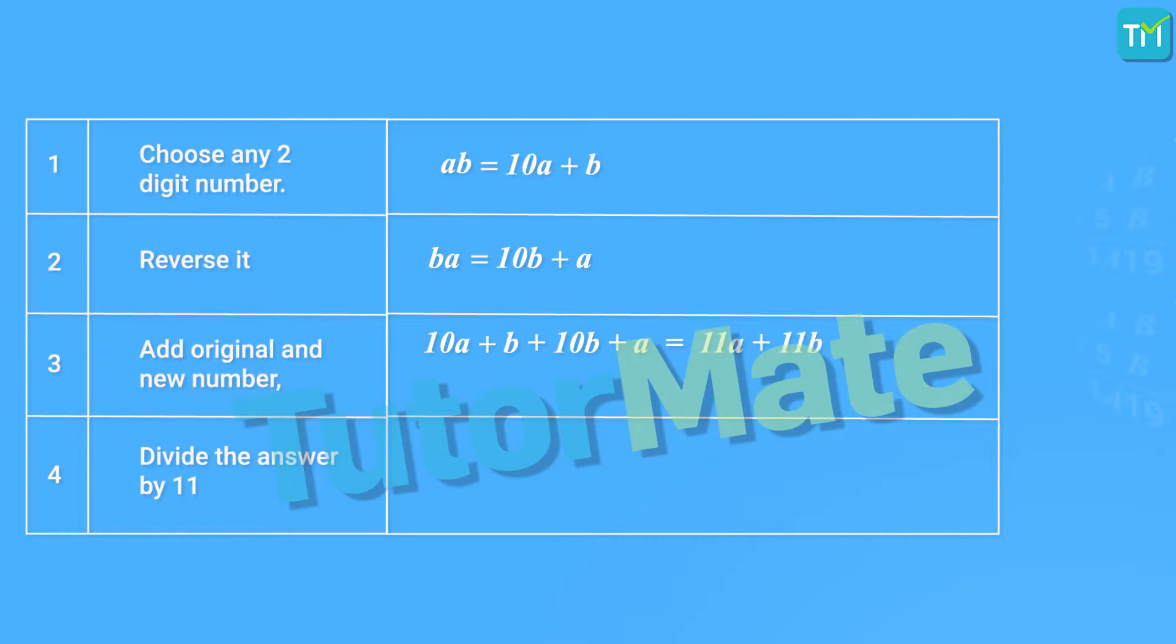So, 10A plus B will be added to 10B plus A, which gives us the sum as 11A plus 11B. In the 2 terms, we see that 11 is common. So, we take 11 common outside the bracket, and inside the bracket, we will have A plus B. Therefore, the sum is 11 into the bracket, A plus B.